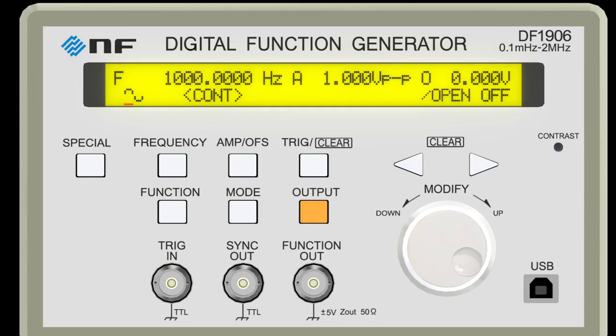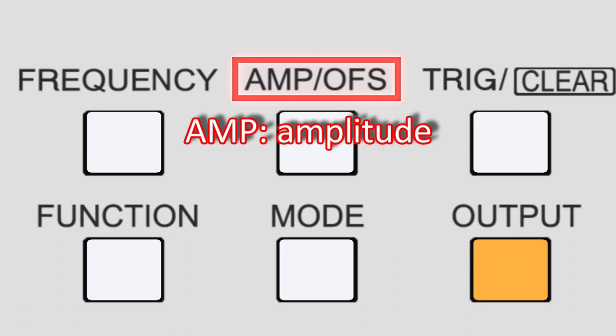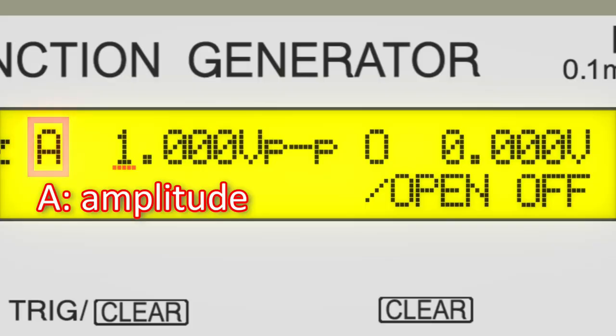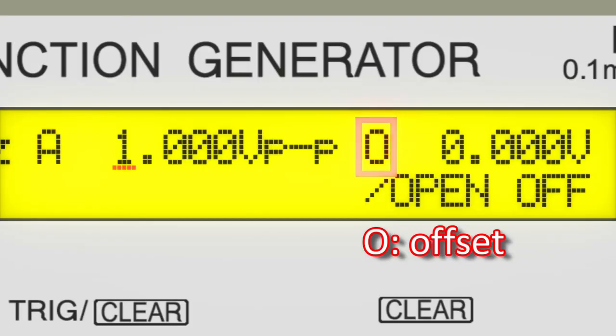Next, let's change the voltage of the signal. Press this button to change the voltage. Amp means amplitude, and OFS means offset. In the LCD panel, A represents the amplitude, and O represents the offset.